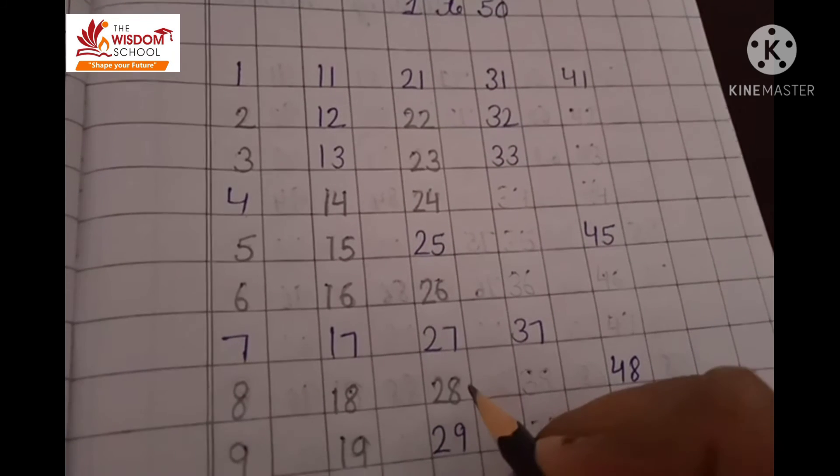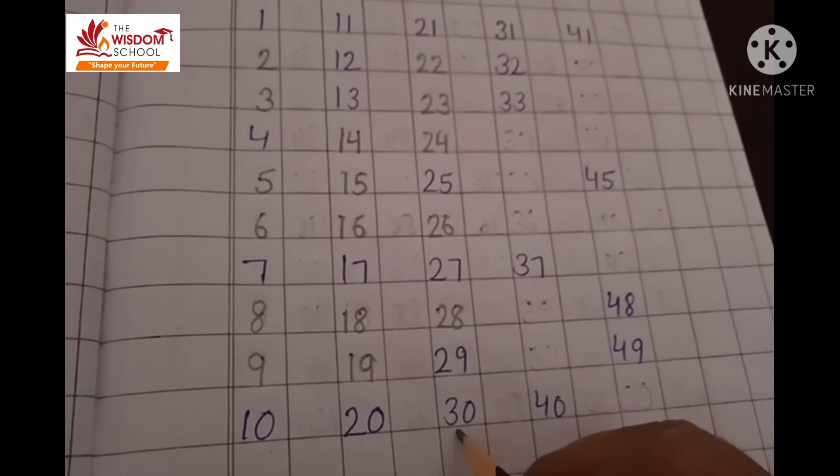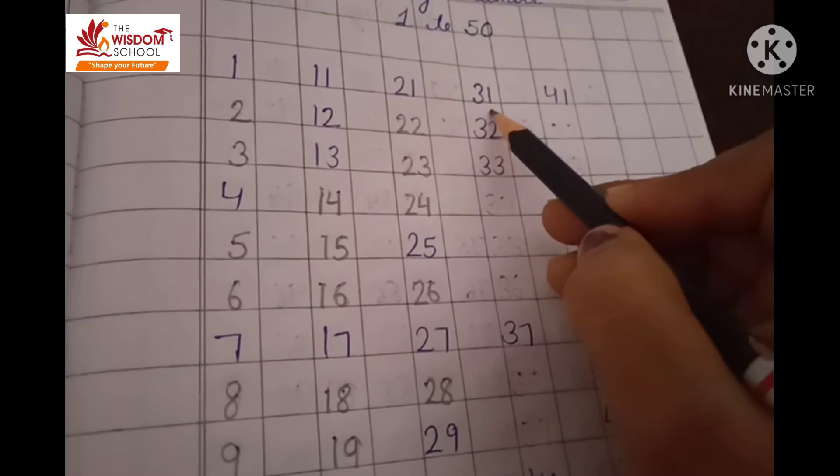21, 22, 23, 24, 25, 26, 27, 28, 29, 30, 31.